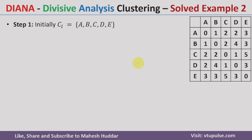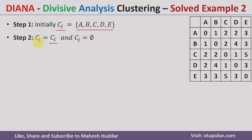In the first step of the divisive clustering algorithm, we will consider all data points as one cluster and name it CL. In the second step, we will assign CL to CI, meaning CI contains all the data points and is the first cluster, while CJ is equal to null — meaning CJ is the second cluster containing no data points.